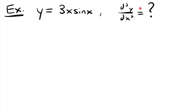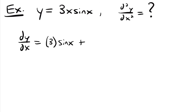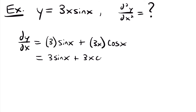How do we find the second derivative of y = 3x·sin(x)? Here we have a product rule, since we have two functions multiplied together — 3x and sin(x). Starting with the first derivative using the product rule: dy/dx equals the derivative of 3x, which is 3, times the original second function sin(x), plus the original first function 3x times the derivative of sin(x), which is cos(x). So our first derivative is 3 sin(x) + 3x cos(x).